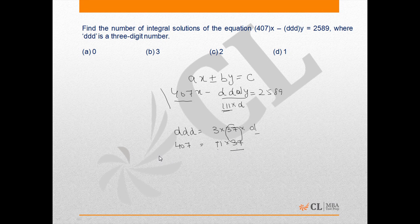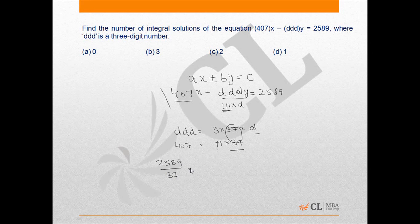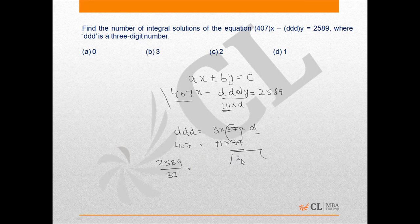Now X and Y will have an integral solution only if 2589 is divisible by 37. On calculating, if we divide 2589 by 37, the number is not divisible by 37. So the answer for this question will be 0 as the first option.